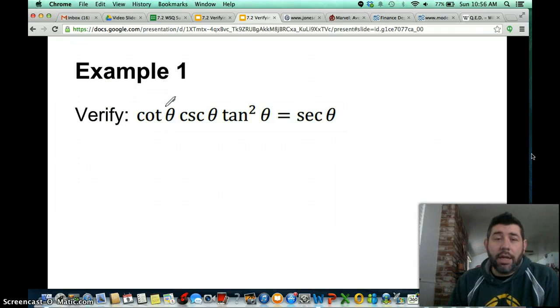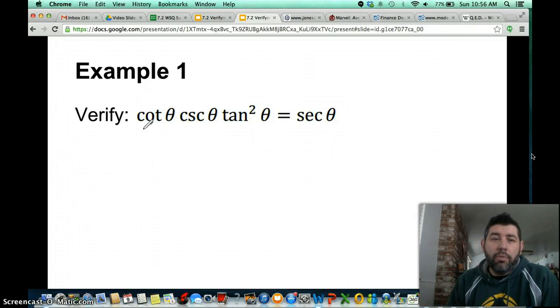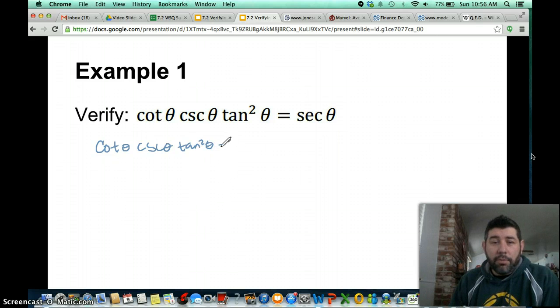So we're going to start with one side. Usually, you start with the most complicated side. That way, you can simplify it to the least complicated side. So this, obviously, here is the more complicated side. So I'm going to start with this side and show that it's equal to secant theta. So we're going to write cotangent theta times cosecant theta times tangent squared theta.